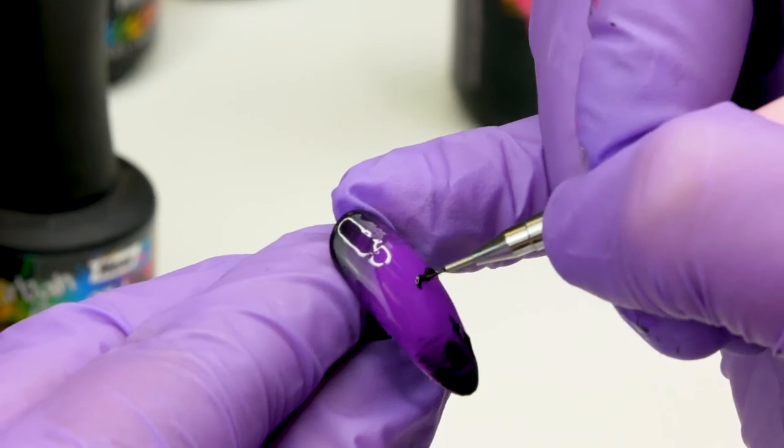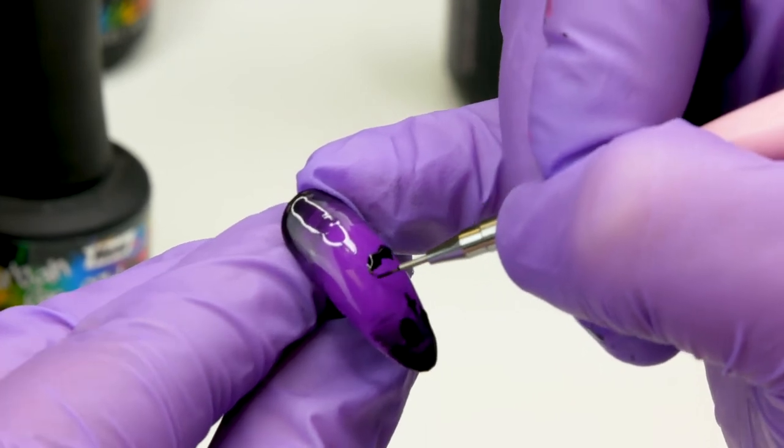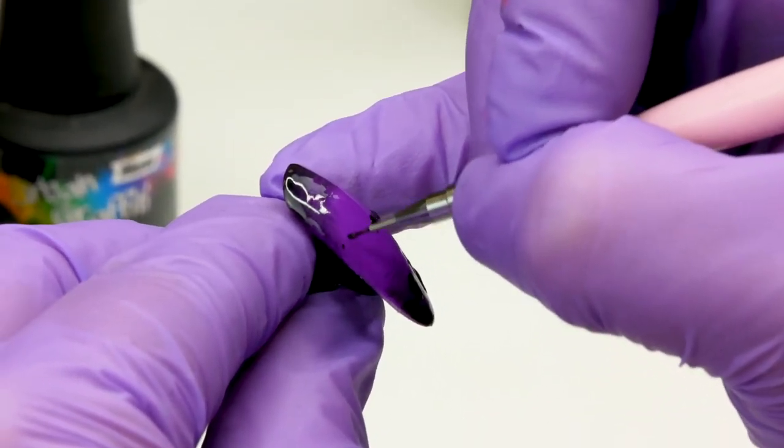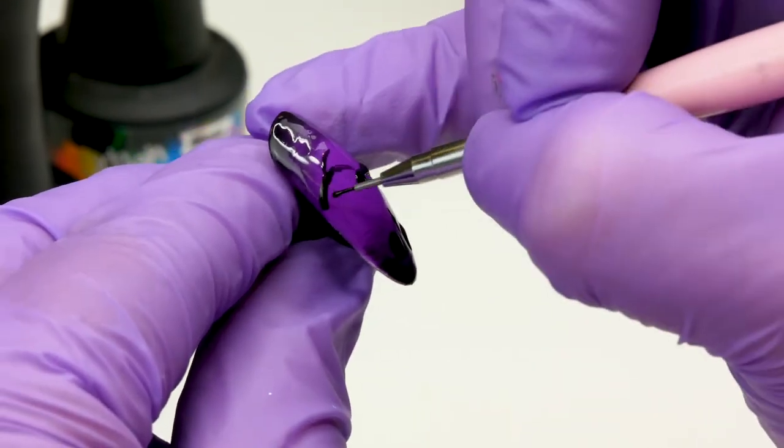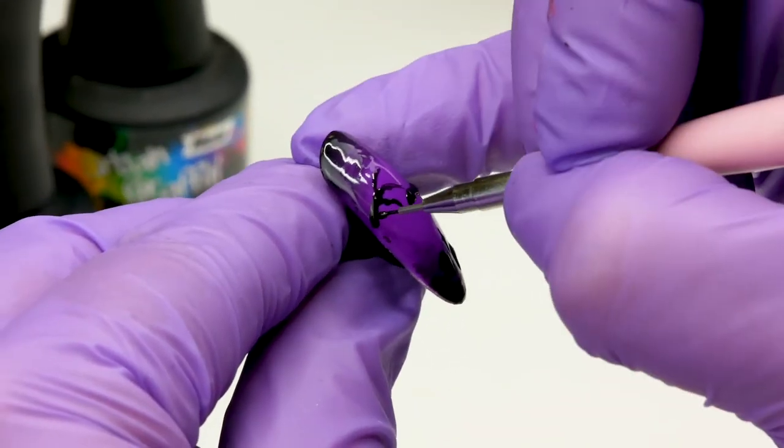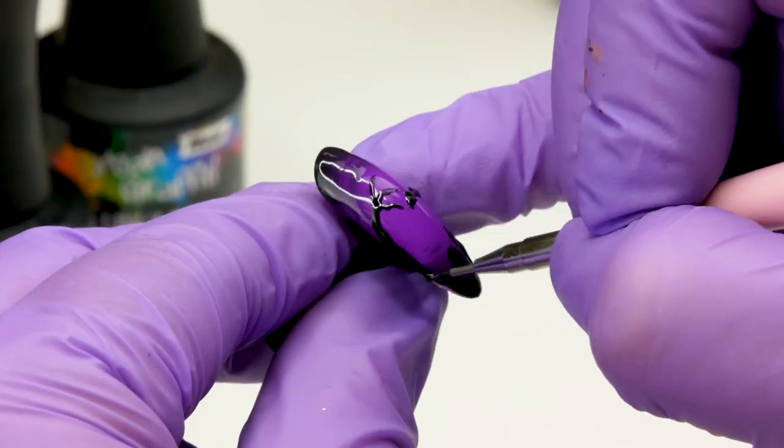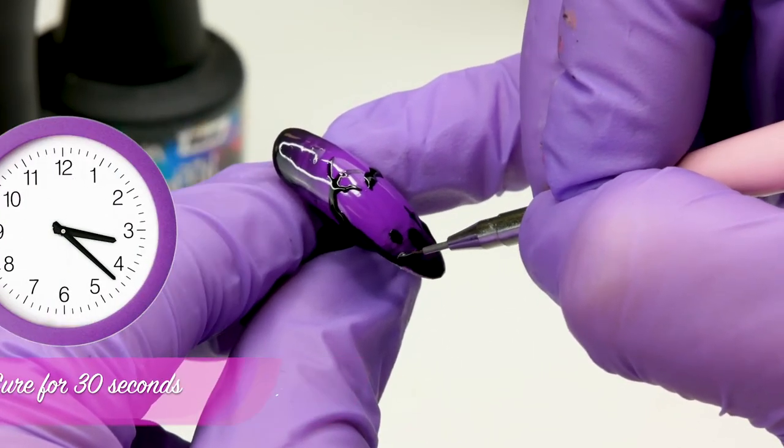A bat. Draw some tree branches coming out the side. Pop that in the lamp and cure that for 30 seconds.